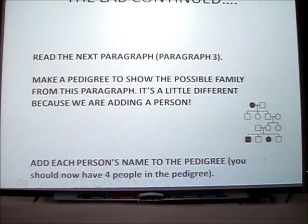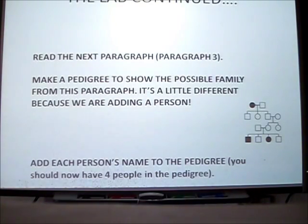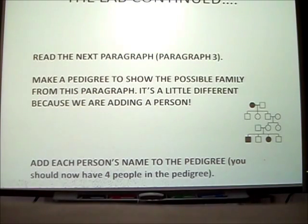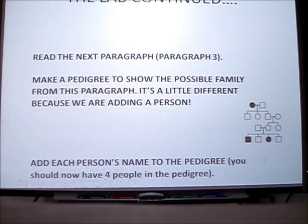Now read the next paragraph — paragraph three of the introduction. Now we have a twist. Make a pedigree to show the possible family from this paragraph. It's a little different because we're adding a person. Somebody's making a claim here. Think about, before you make the pedigree, what's the relationship of this new person, Daryl? Once you think you have it, please make the pedigree on the space provided in your pre-lab notes and add the names of the people to the pedigree. You should have a total of four people. Pause the video and please make your pedigree.